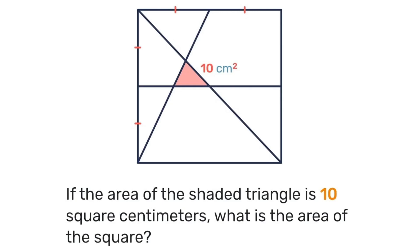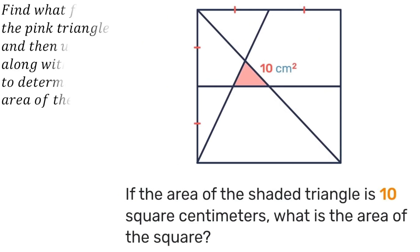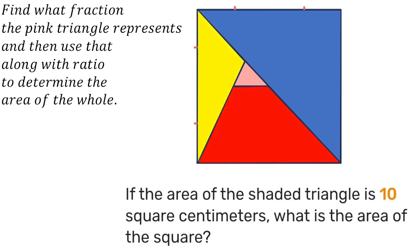I'm going to solve it this way. My overall idea would be I am going to find what fraction the pink triangle represents and then use that along with the ratio to determine the area of the whole square. So I'm going to be finding the area of this blue triangle, the area of this yellow triangle, and the area of this red trapezium, subtracting all of those from the unit one, and then that will give me the area of the triangle in terms of a fraction of the whole and then I'll use that ratio to determine the area of the entire square.